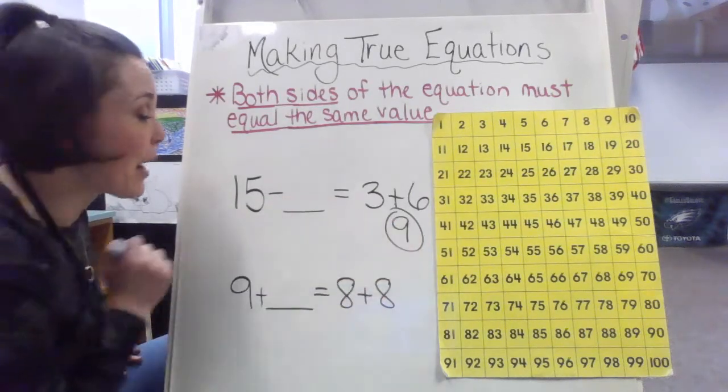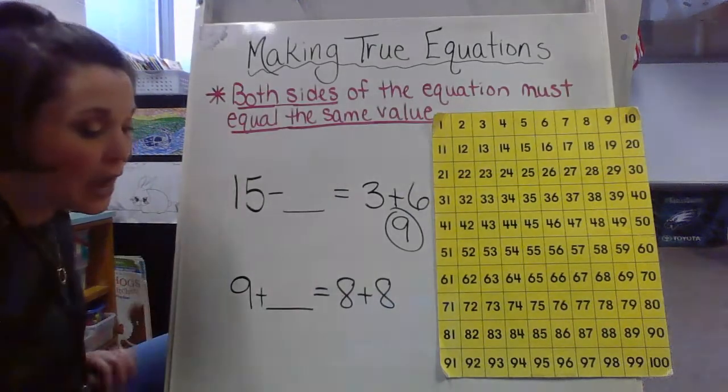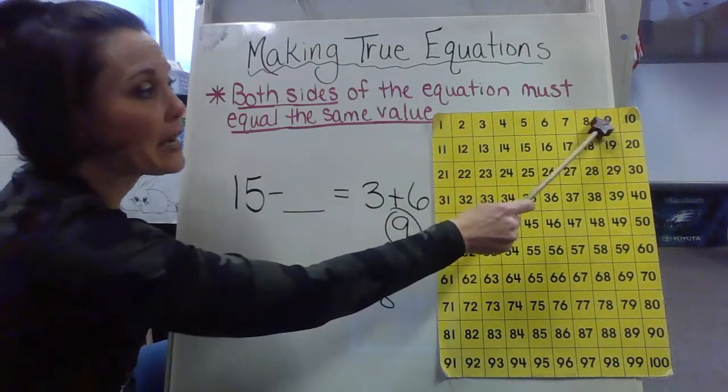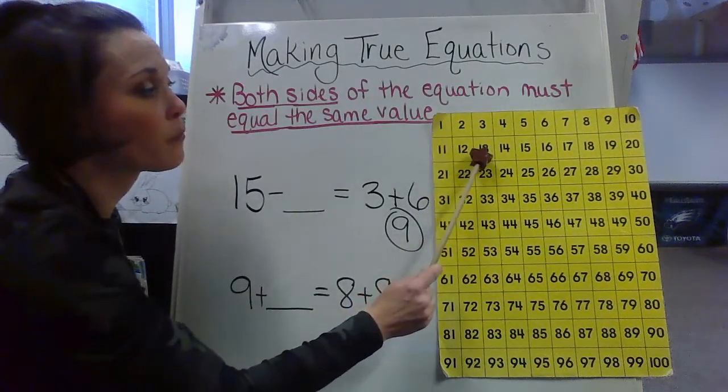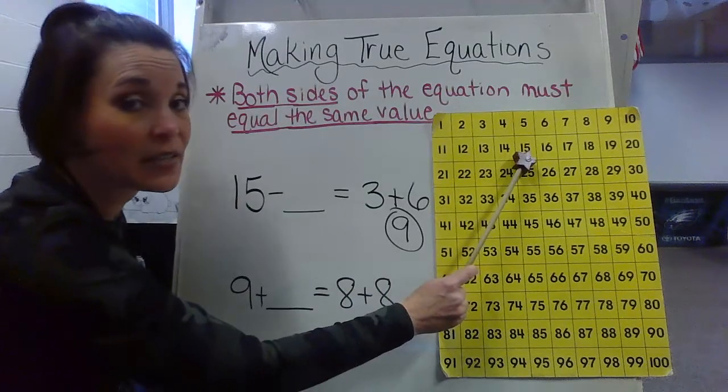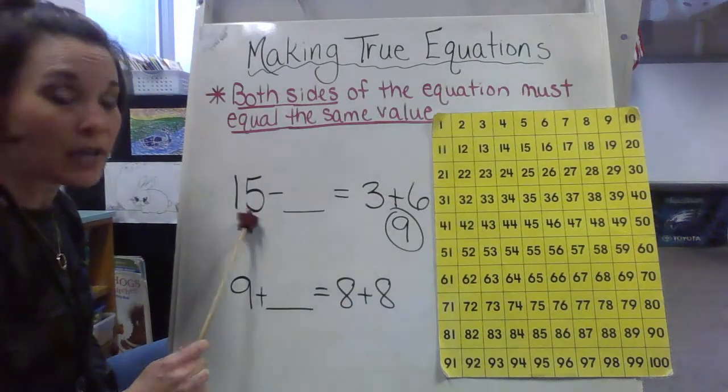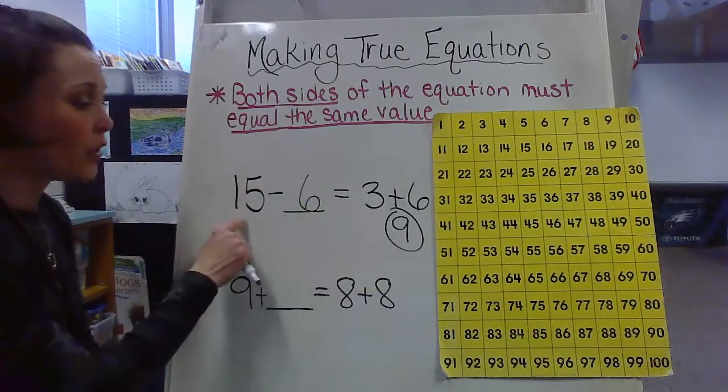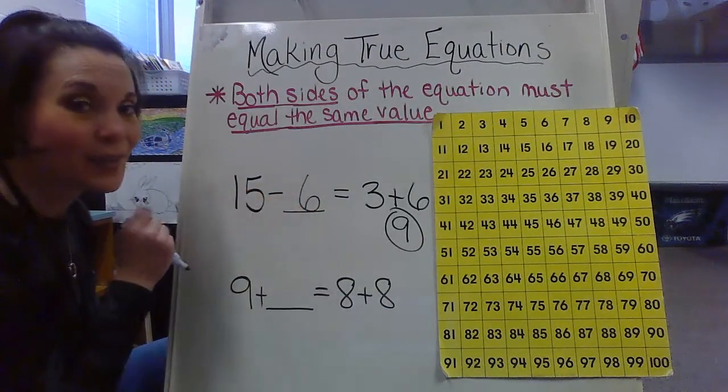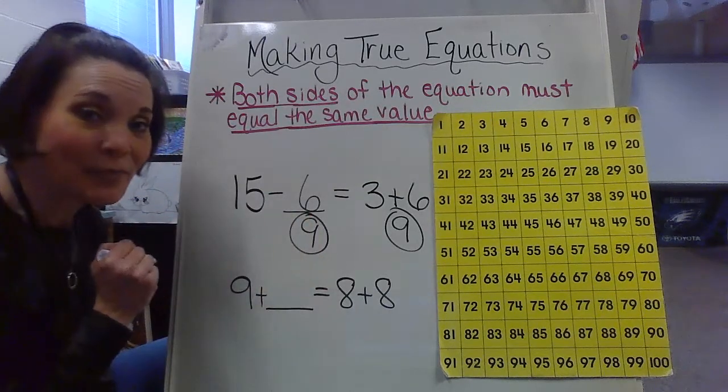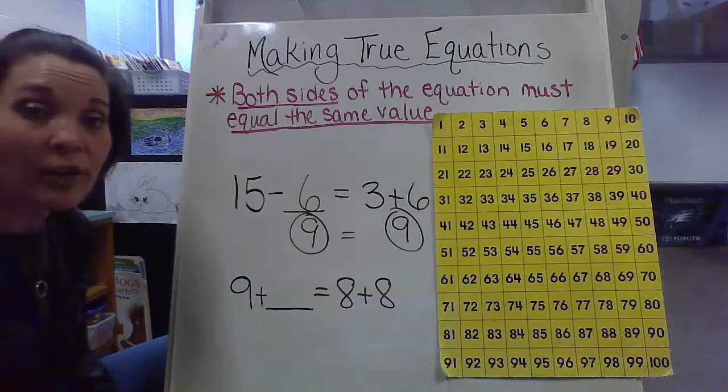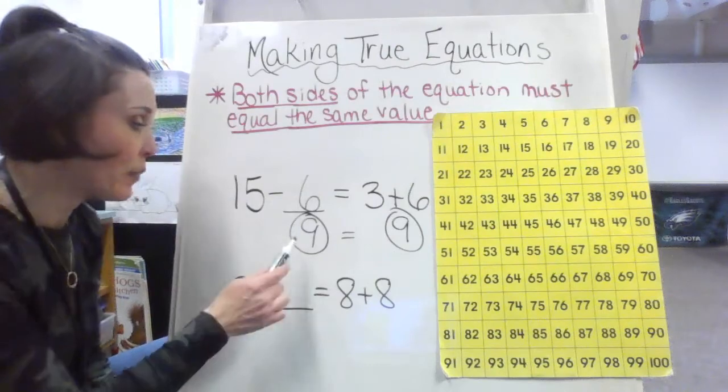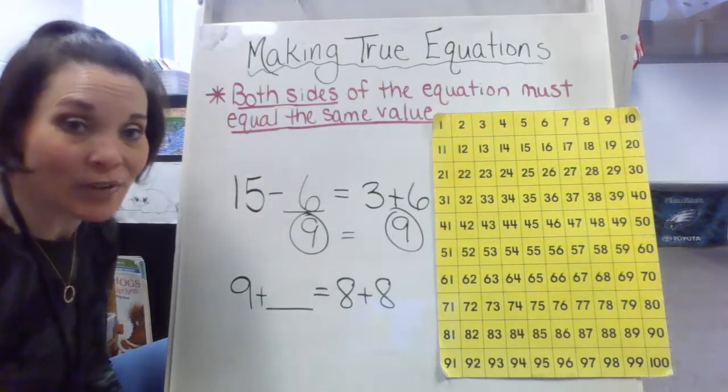So I'm going to take my 9. I'm going to count up to 15. I have my hundreds chart here just as a quick helper. So I have 9 and I'm going to count on 1, 2, 3, 4, 5, 6, because I need to stop at 15 because 15 is right here. So that would be 6. So 15 minus 6 would give me 9. So therefore they are now true because both answers will be exactly the same. Answer of 9 here, answer of 9 right there.